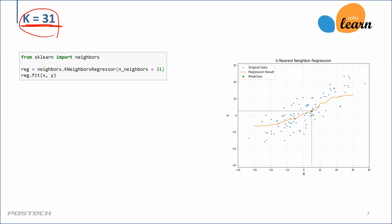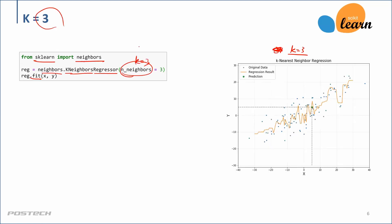So k is a tuning parameter you can play with. In two-dimensional space you can visualize and plot to see the effect. But think about high-dimensional space — there's no way to plot them.